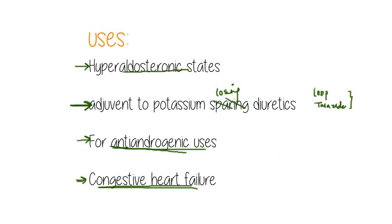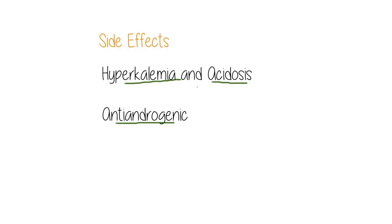The side effects of potassium sparing diuretics: the first is hyperkalemia, because of the loss of potassium ion secretion. The second is acidosis, because of the loss of H+ ion secretion. Another side effect is anti-androgenic side effects, especially associated with spironolactone and eplerenone because they block the androgenic receptor. That is all about this video — do subscribe to the YouTube channel for more videos like this.